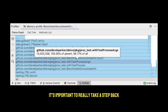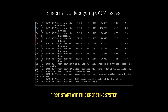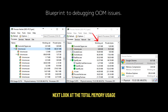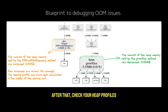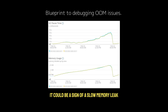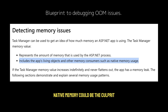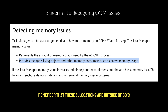When debugging an out-of-memory issue, take a step back and look at the bigger picture. First, start with the operating system — check system logs for messages indicating the OS killed your process due to memory constraints. The OS cares about total memory consumption, not just your heap. Next, look at total memory usage, not just Go's heap, since your application might be consuming too much memory elsewhere. After that, check your heap profiles. If the heap keeps growing without being collected, it could be a slow memory leak or inefficient memory allocation. Don't forget about native memory — if the heap looks fine but your app is still crashing, things like syscall.mmap or large buffers in I/O operations could be the culprit. These allocations are outside Go's GC control and won't show up in heap profiles.